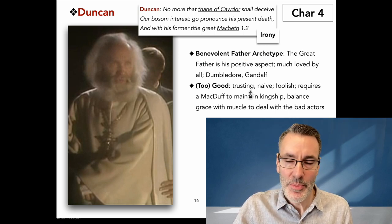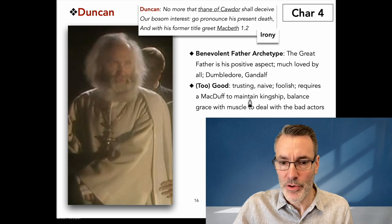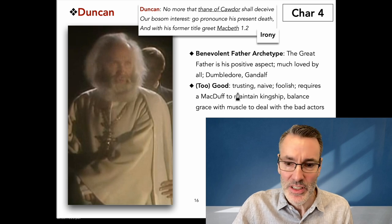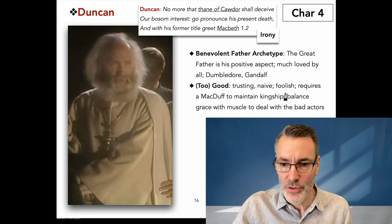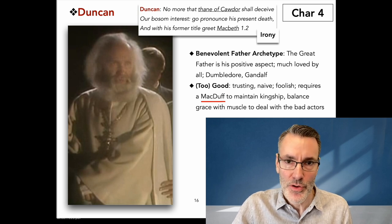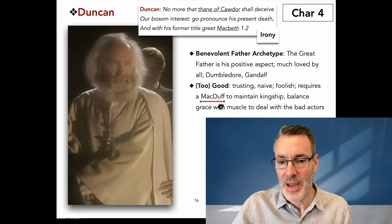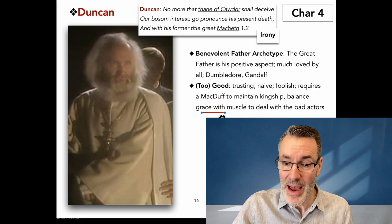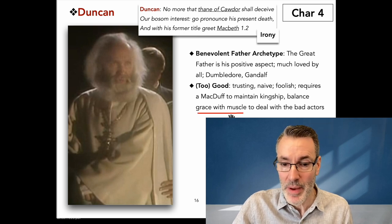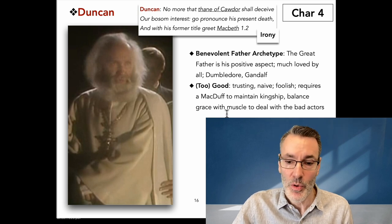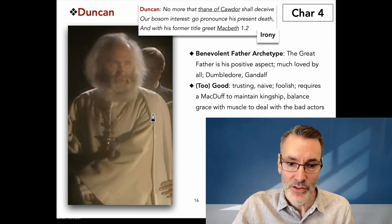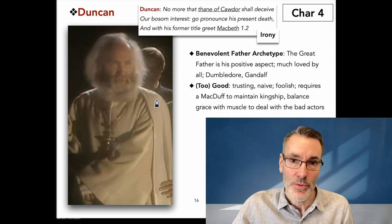However, it's not enough simply to be good, especially if you're a ruler. I talk about this in the theme video — what constitutes a good ruler, and it's not simply goodness. He's too trusting, too naive, he's foolish. He requires a tough-nosed Macduff, who's a doer and not a thinker — a man of action. He requires that Macduff to maintain his kingship, to balance grace with muscle. That's what a good ruler requires: to deal with the bad actors, to deal with the Macdonwalds, to deal with the Macbeths. You need that combination of powers, and he didn't have it, and that's what led to his downfall.